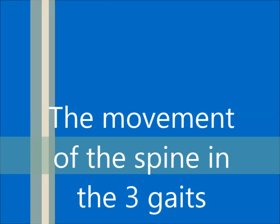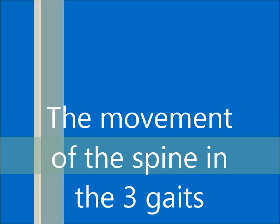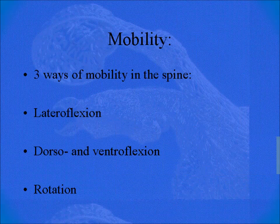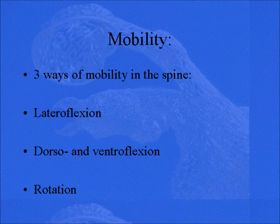In this lecture, I'd like to show you a little bit more about the movement of the spine in the three gaits. When you talk about movement, we have three options: lateral movement, flexing to the side; dorsal and ventral flexion, when it moves up and down; and rotation, which really means that certain vertebrae rotate relative to each other.